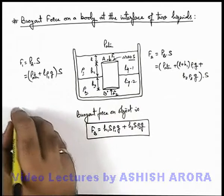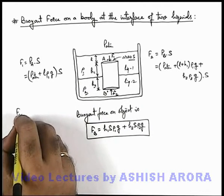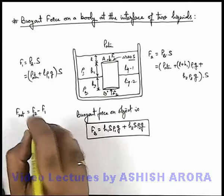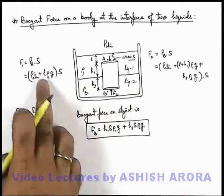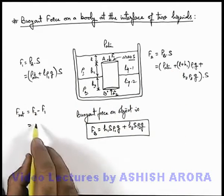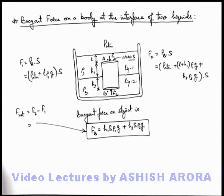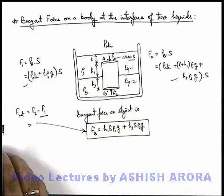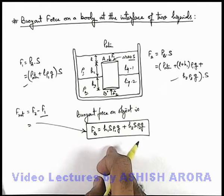So net force acting on it independently can be calculated as F₂ minus F₁. If you substitute the values of F₂ and F₁ over here, you can see the direct result you're getting is this. You just substitute F₁ this and F₂ this over here. So this is a direct way to calculate the buoyant force.